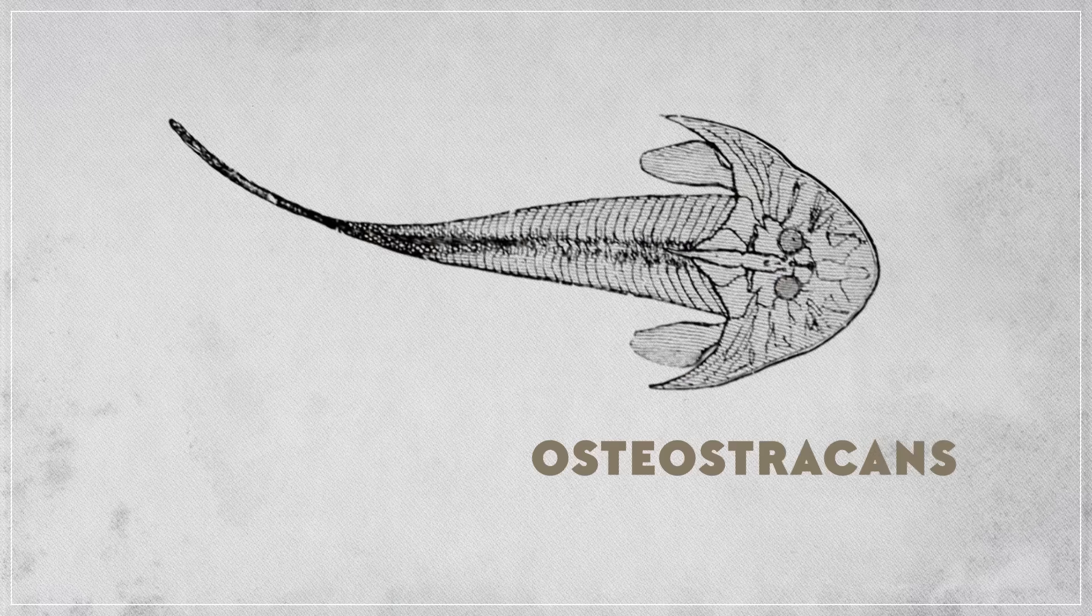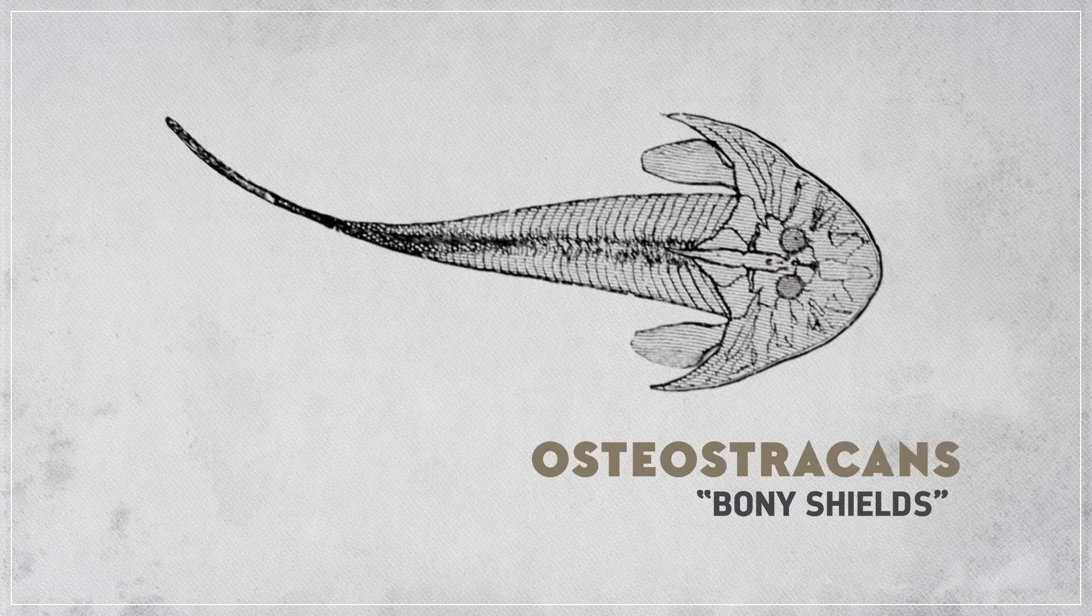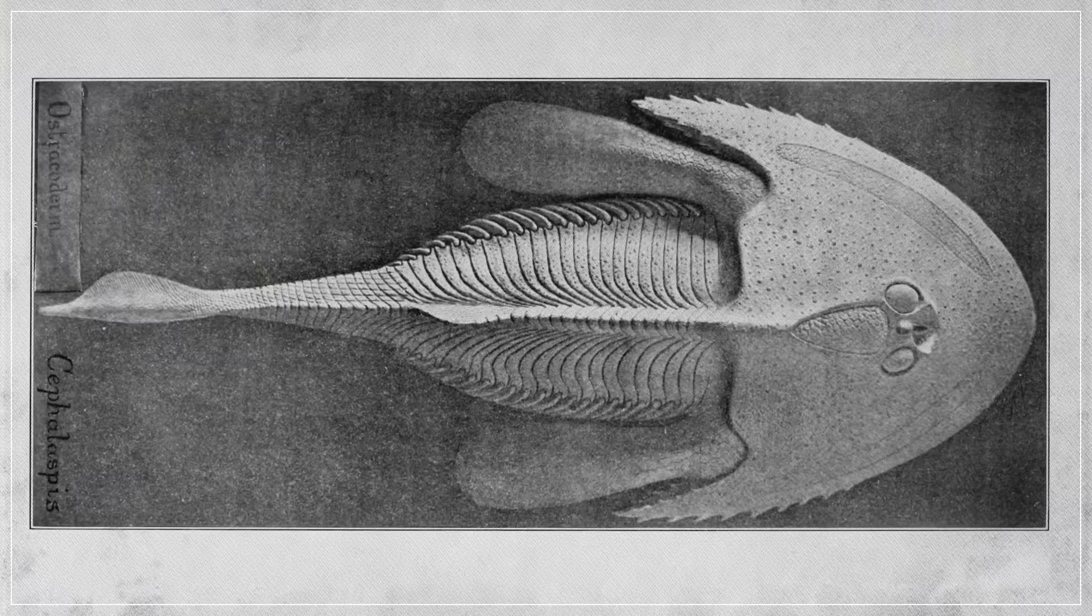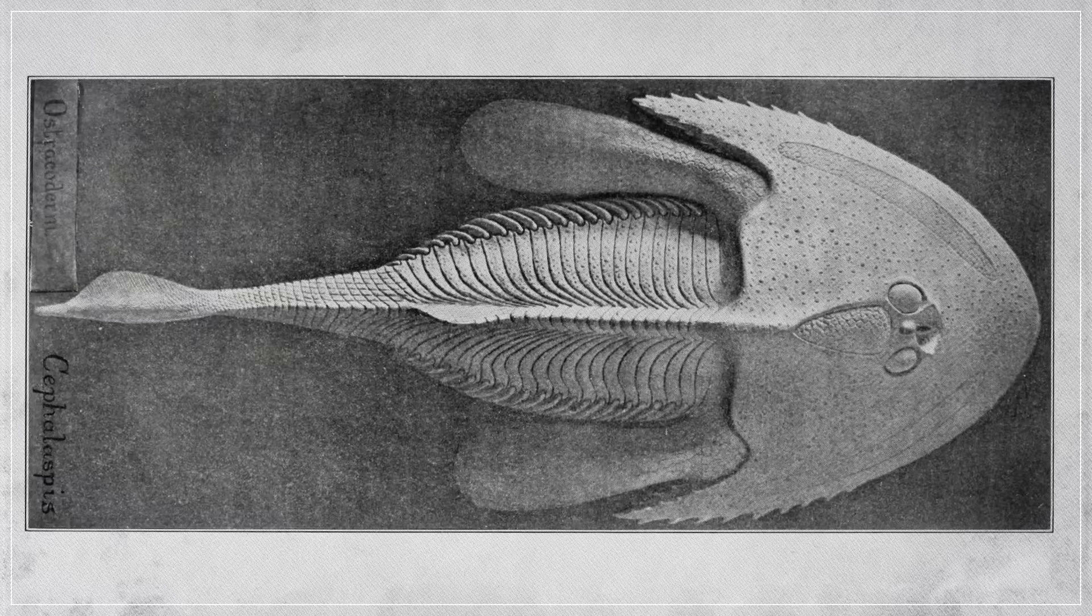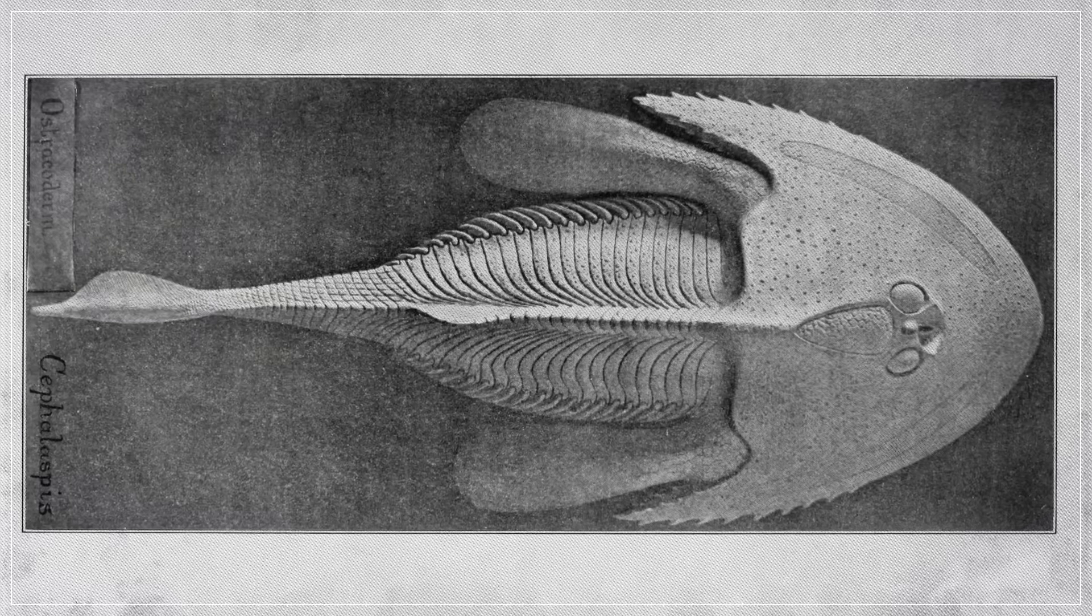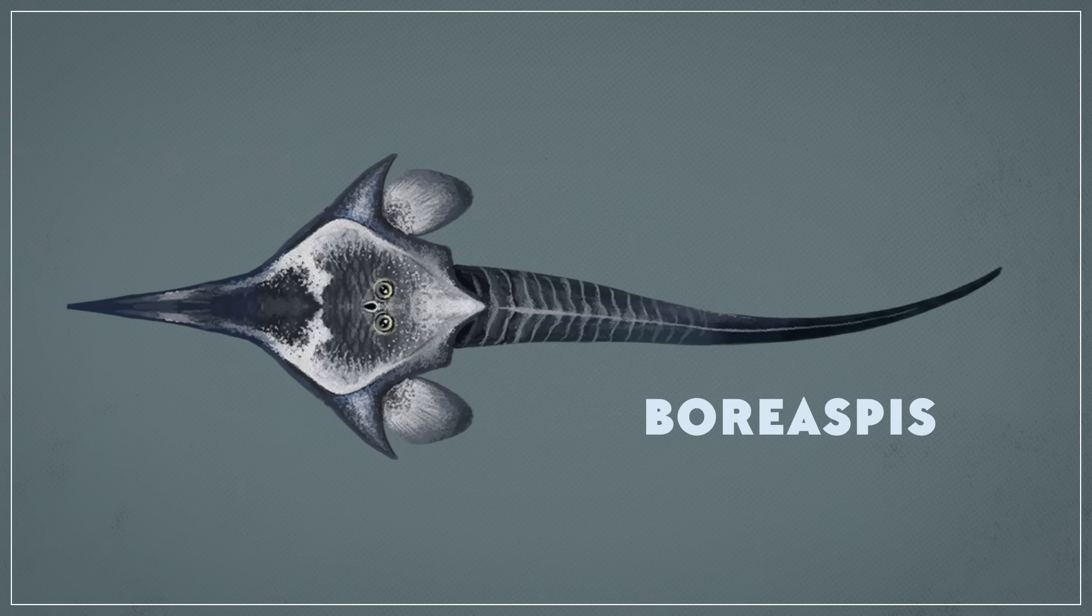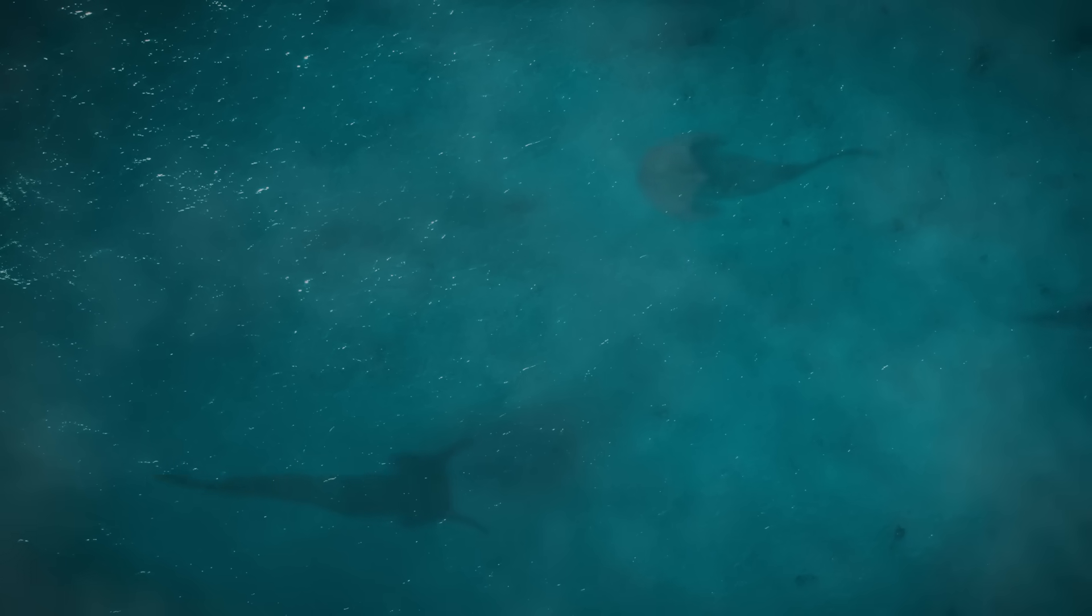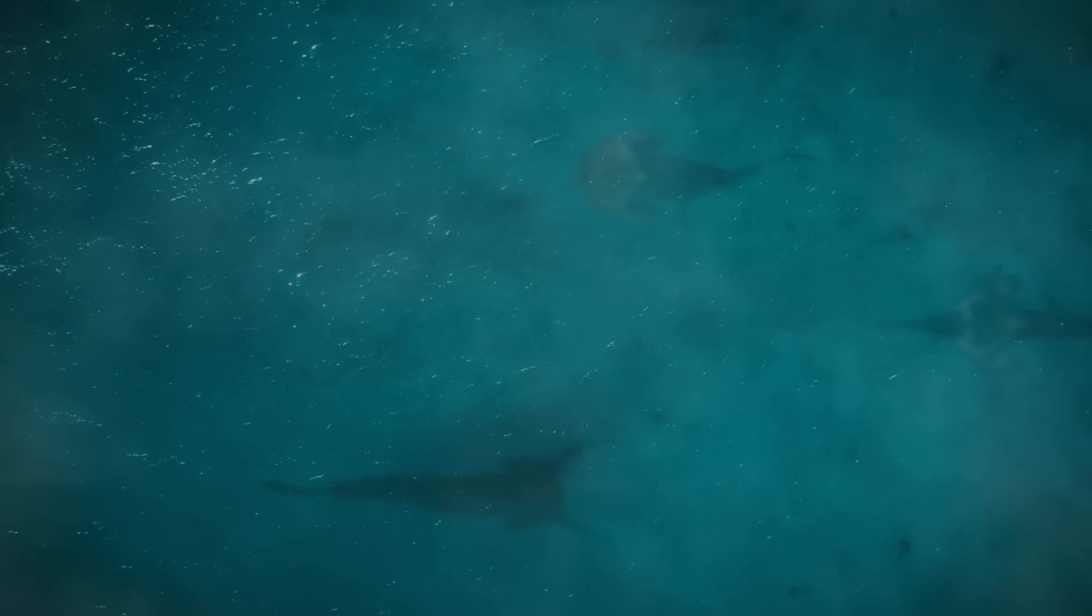But head plates took on new forms in another group of jawless fish, the Osteostracans, whose name means bony shields. The armor on these fish was typically just a large one-piece shield that covered the head, made out of dentine and bone, with smaller linear scales along the body. These head shields were wider than the rest of the body, and they sometimes tended toward extravagance, as in the case of Boreaspis, a fish that sported a large spike sprouting from its face. Osteostracans also boasted a brand new feature: fins, namely dorsal and small paddle-like side fins that gave them greater mobility in the water.